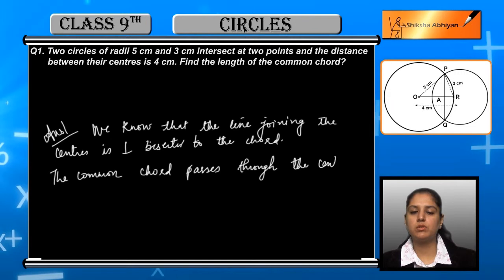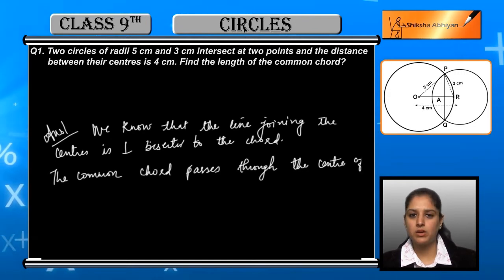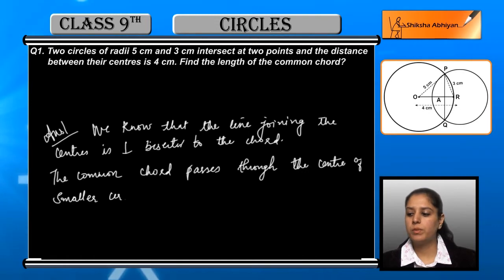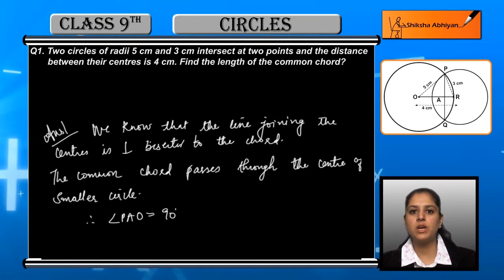We can say that angle PAO is equal to 90 degrees because they are perpendicular. OA is equal to 4 centimeters and OP is equal to 5 centimeters because these are both radii of the circles, and OA is the distance.